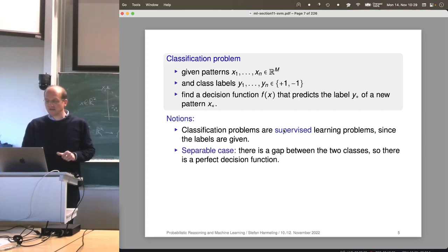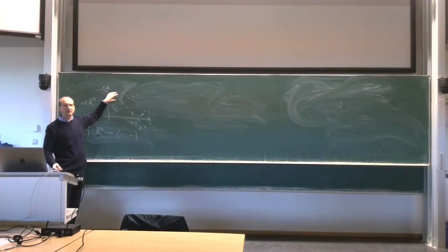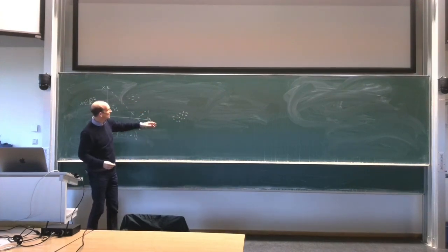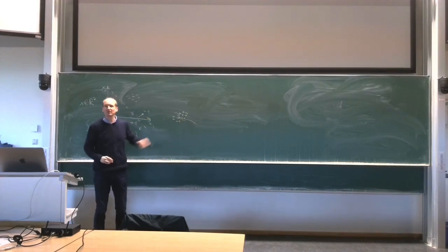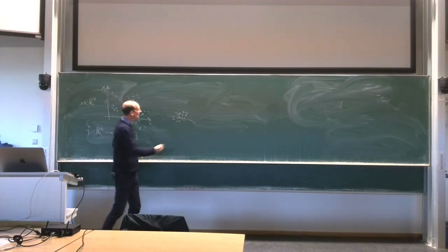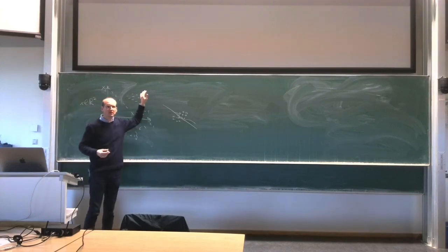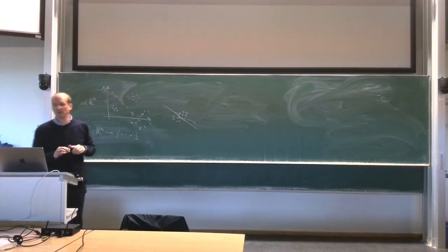Today we look at the separable case, which basically means there's a gap between the examples — there's an area where there's nothing, so we have two clusters. The non-separable case is where the two classes overlap. Today we also only look at the linear case — meaning the separation is linear. We can separate the two classes by a straight line. If there's some curve to split the data, that's a nonlinear case; if I can draw a straight line, that's the linearly separable case.